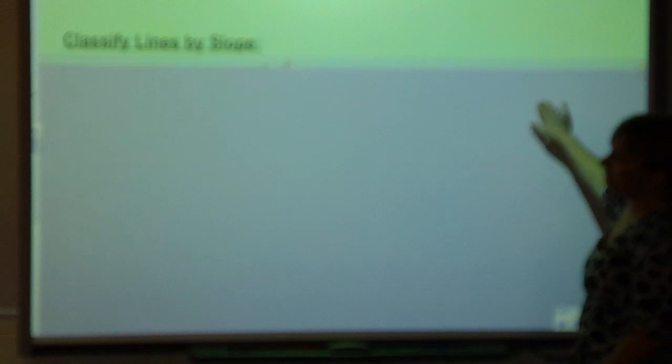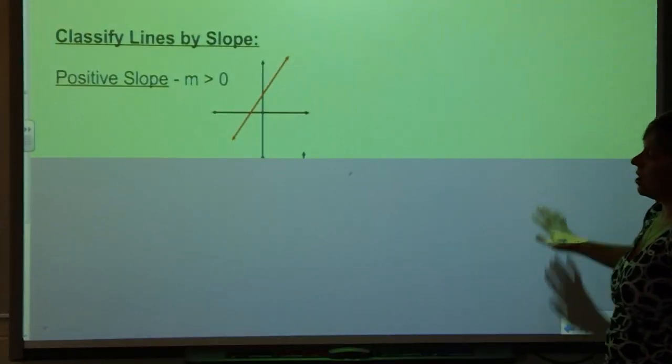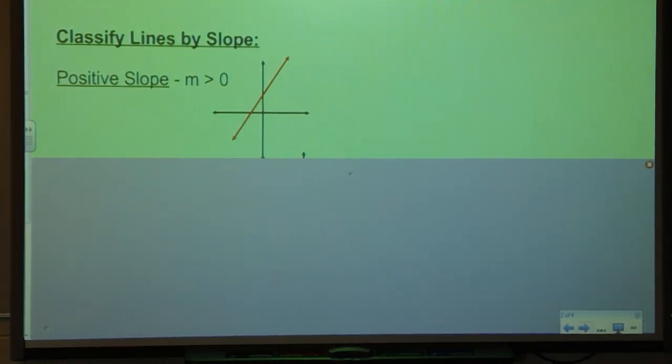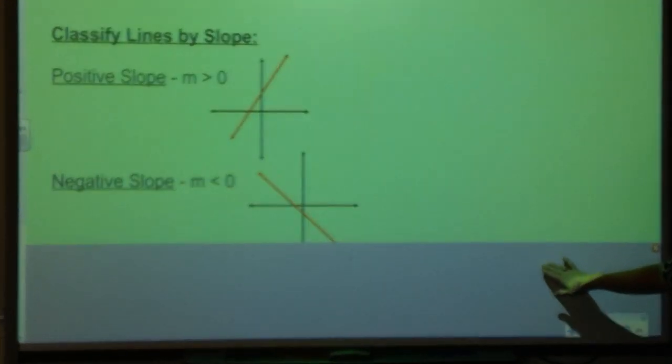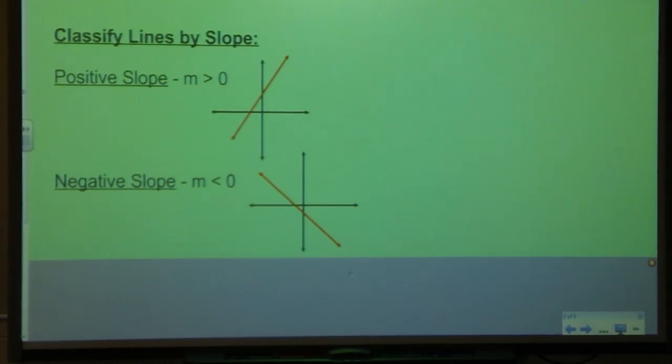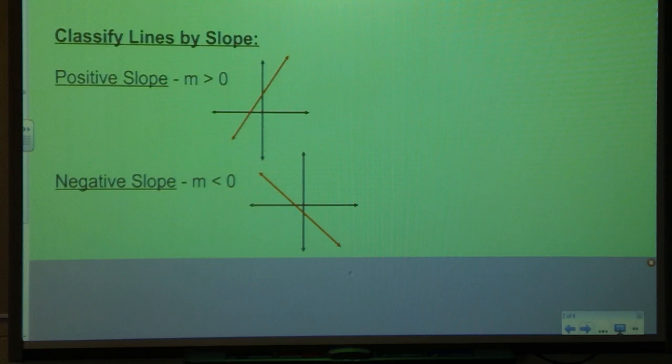We can classify lines by slope. The first type of line that we can have is a positive slope. Positive slope lines have an m, my slope, greater than 0 and looks like that red line there. I can also have a negative slope. My negative slope is going to have a slope value of less than 0 and it will look like that red line there.